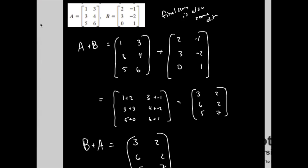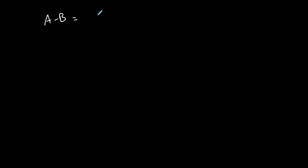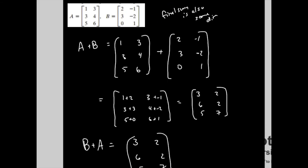We'll do subtraction. Let's do A minus B. And the same idea has to be true, right? The two matrices have to have the same order or dimension. 1, 3, 3, 4, 5, 6, A minus B: 2, negative 1, 3, negative 2, and 0, 1.